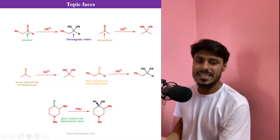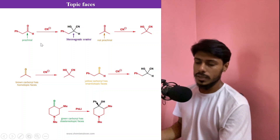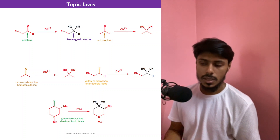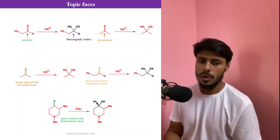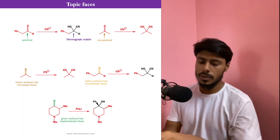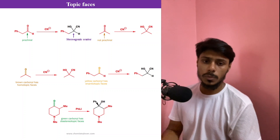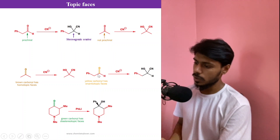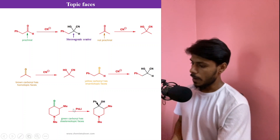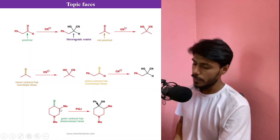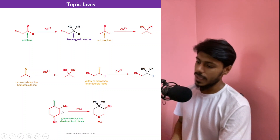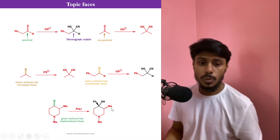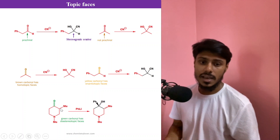For the non-prochiral case, the two faces of the carbonyl compound are equal — it doesn't matter which face you attack, you get the same product with no chirality. But in the prochiral case, the two faces are not equal: attacking from one face gives a different stereochemical product than attacking from the other, and these two products are enantiomers of one another, so we call these enantiotopic faces.